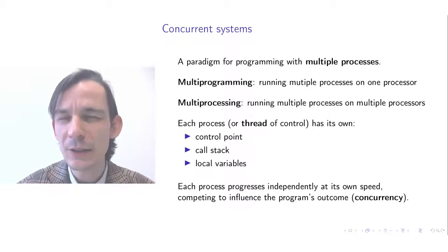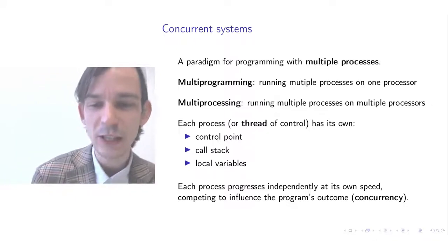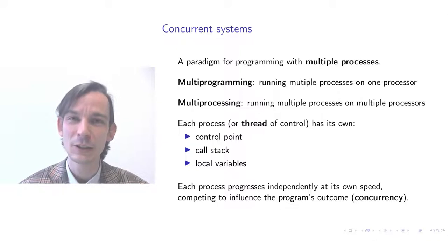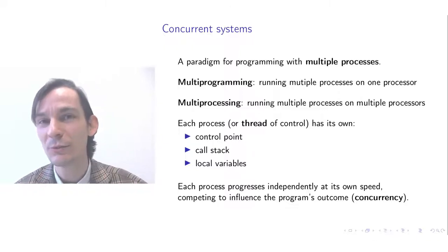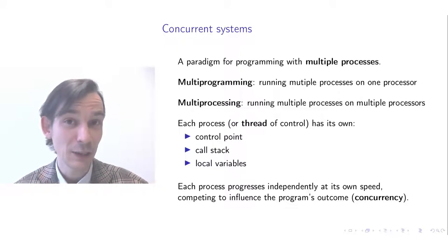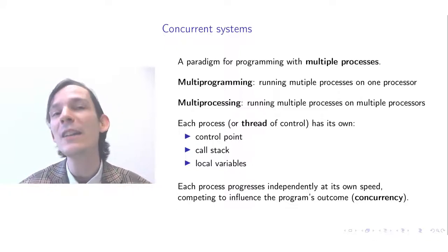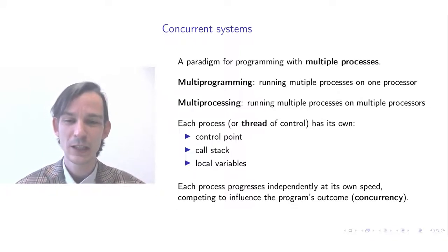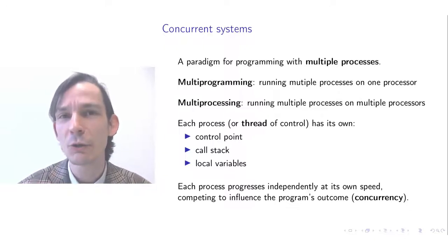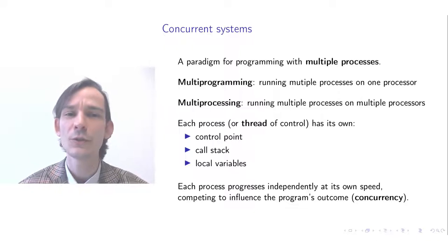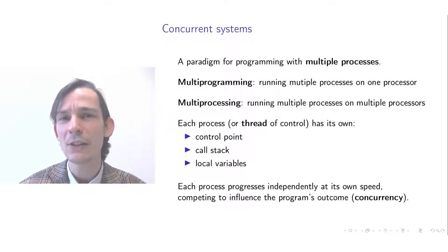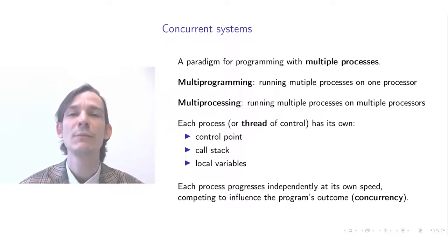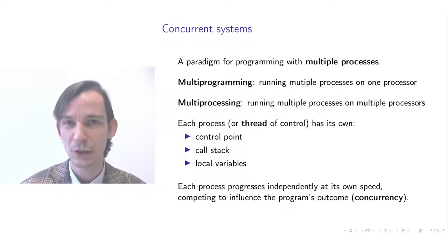Whenever you have multiple processes, these processes are progressing — executing independently of each other. So it is possible for one process to be progressing at a higher speed than another. It could appear as if one process is very slow while another is executing very fast. The reason we call these concurrent systems is that if you think of these multiple processes, they are all competing with each other to influence the overall program's outcome, and this is why it is called concurrency.